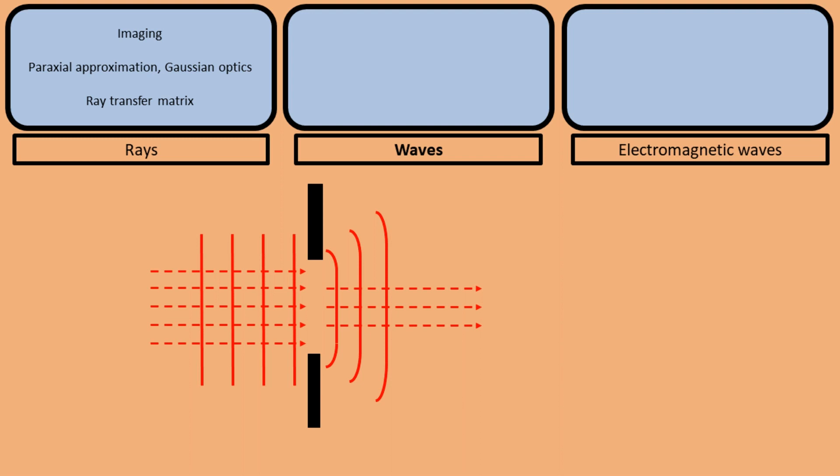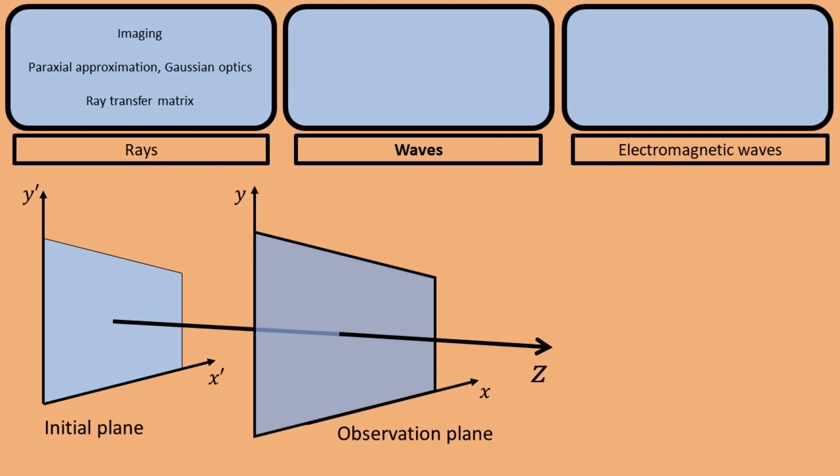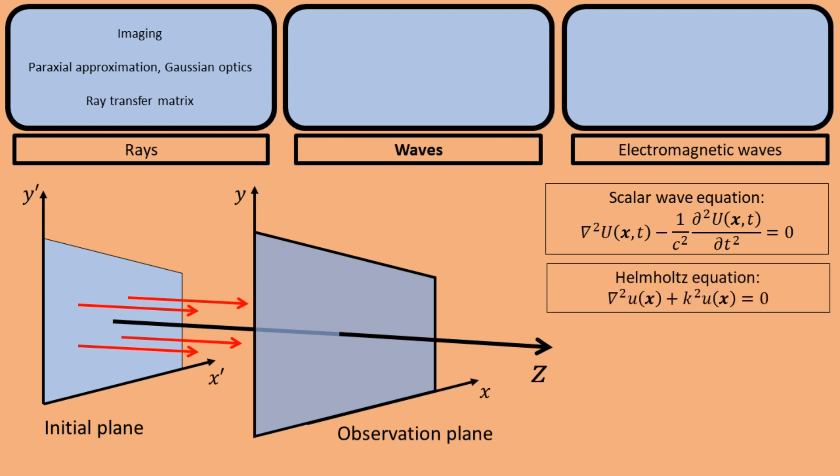The problem we want to solve is the following. We have an initial plane in which we know the field. If the light propagates a certain distance to an observation plane, how can we calculate what the field in the observation plane looks like? Mathematically, what we're trying to do is solve the scalar wave equation, with the boundary condition given by the field in the initial plane. If we assume the light is monochromatic, so it consists of only one wavelength or one frequency, we can derive the Helmholtz equation from the wave equation, using separation of variables. Note that the Helmholtz equation depends only on space, not on time. To solve this problem, there are two ways which give different insights and intuition about what happens when light propagates. These methods are the angular spectrum method and the diffraction integrals.